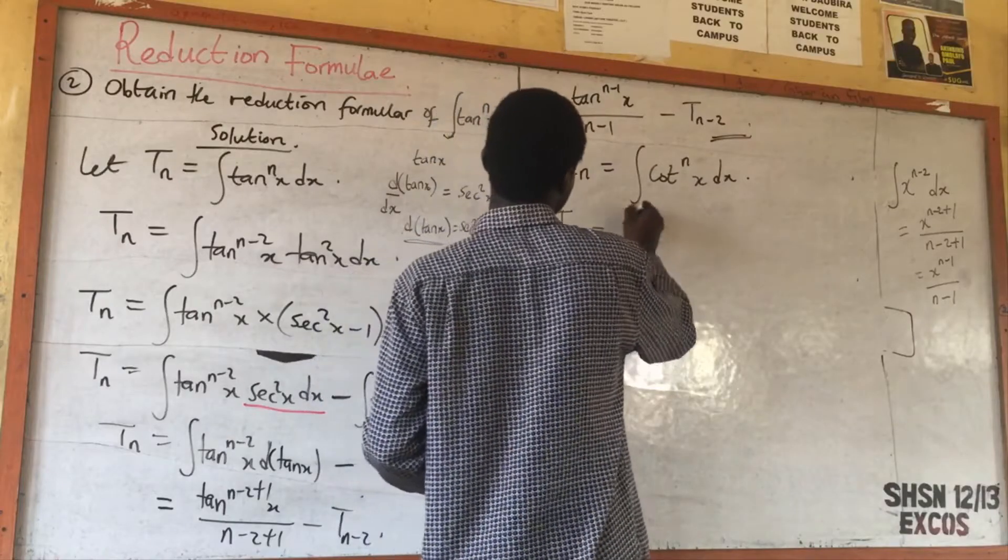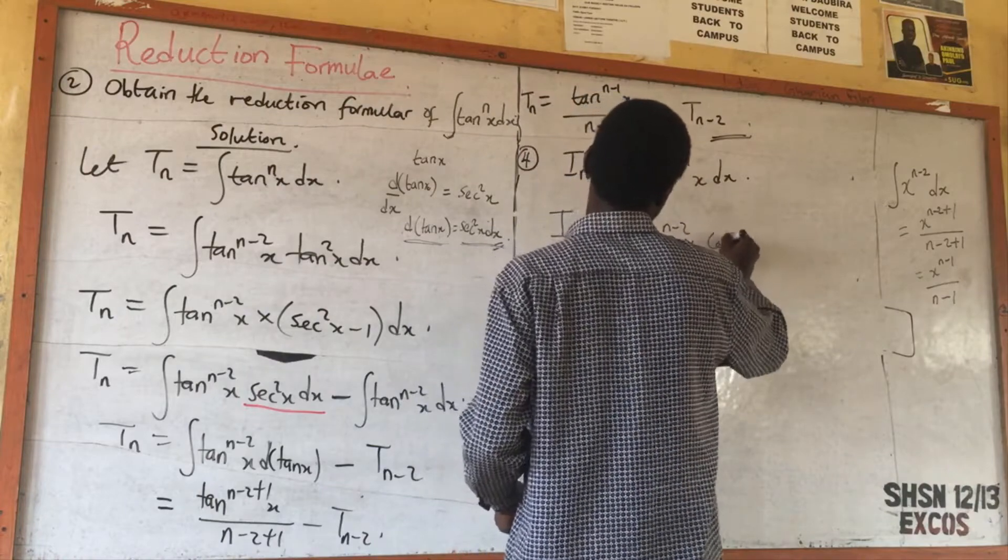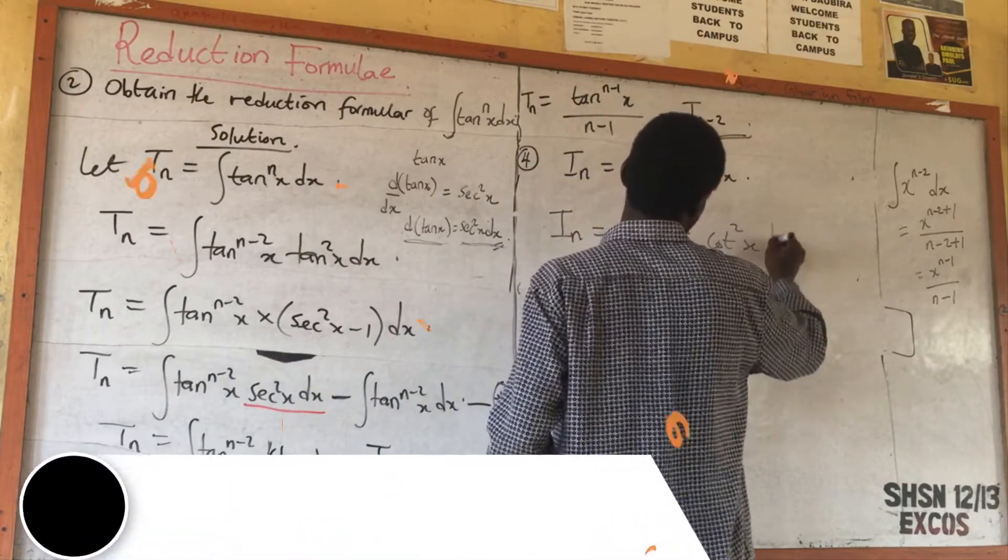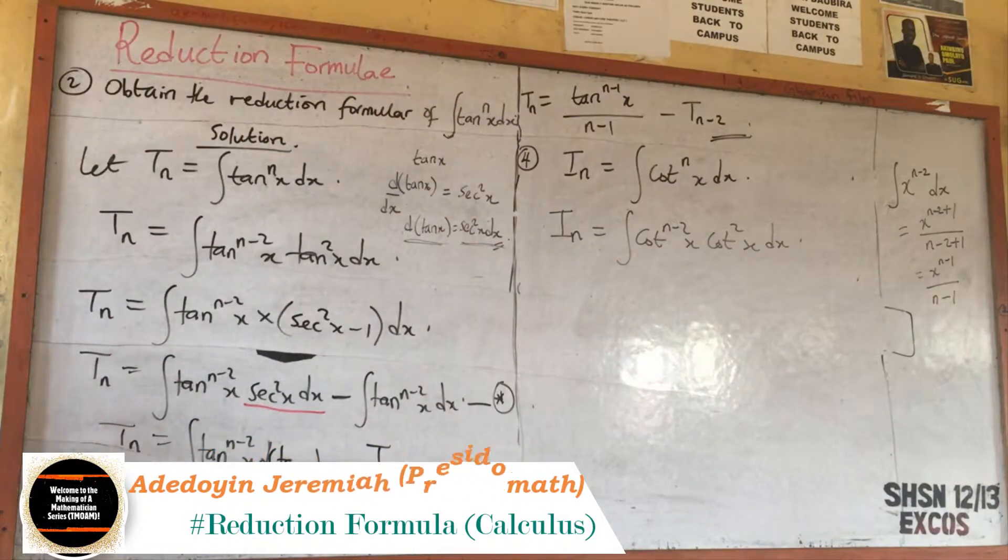I_n will be equal to the integral of cot^(n-2)s cot²s. That's what we are going to have.